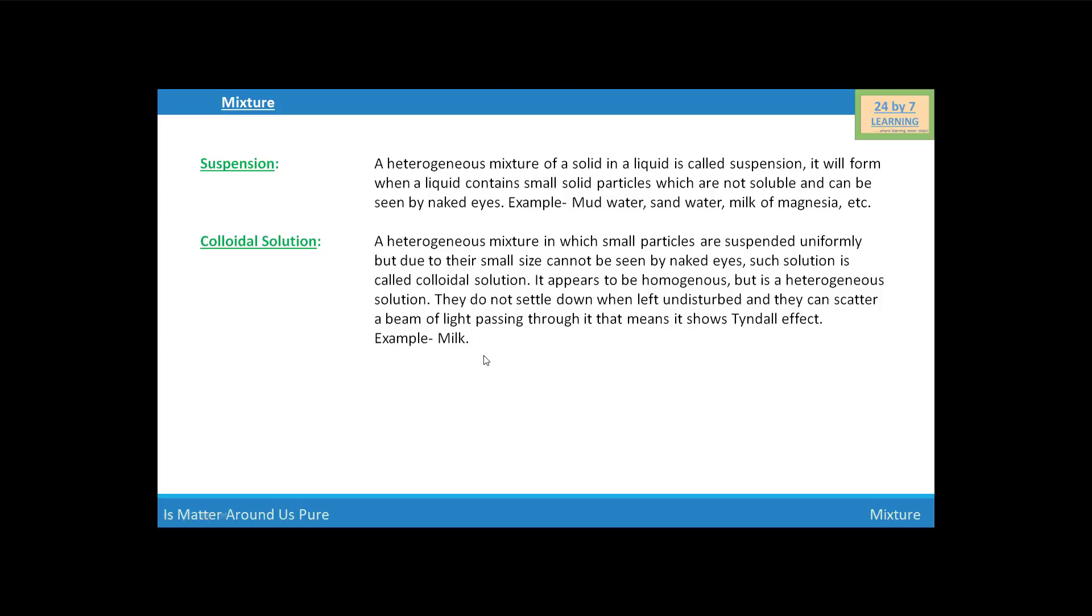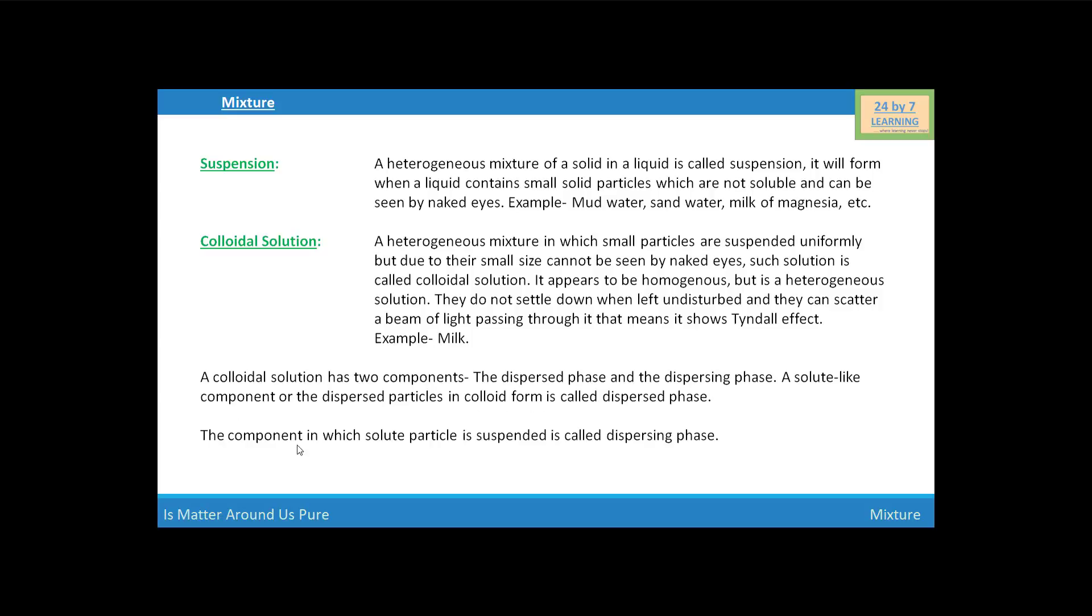For example, milk. Milk is a colloidal solution. A colloidal solution has two components: the dispersed phase and the dispersing phase. A solute-like component or the dispersed particle in a colloidal form is called dispersed phase. The component in which solute particle is suspended is called dispersing phase. So, students, this is all about mixture. Thank you.